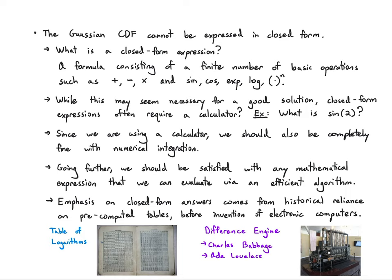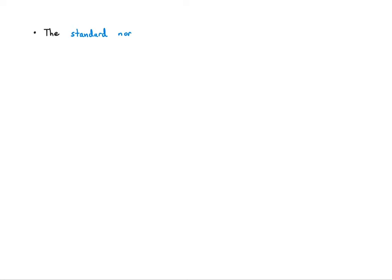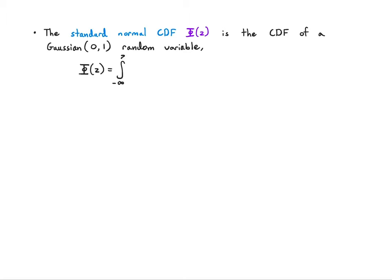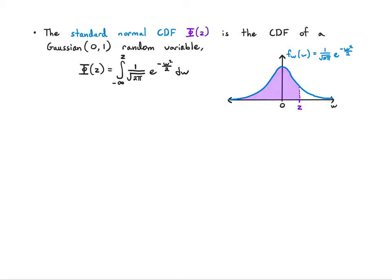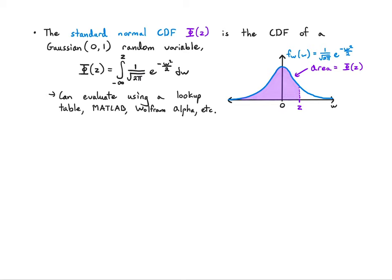With that history aside, let's get back to the standard normal CDF. Capital Φ is simply the CDF of a Gaussian random variable with mean zero and variance one. Specifically, Φ(z) equals the integral from minus infinity to z of the standard Gaussian PDF — which simplifies since σ²=1 and μ=0 drop out. You can obtain values using a lookup table, MATLAB, Wolfram Alpha, or basically any computing tool.